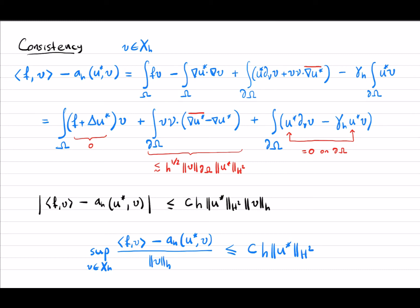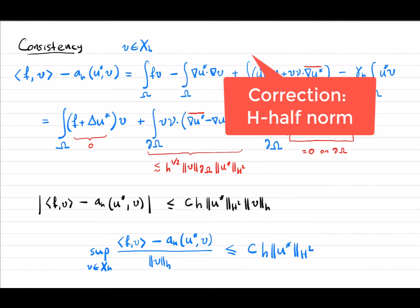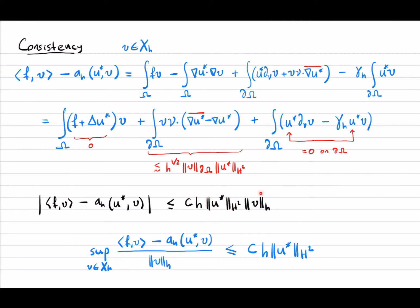The only thing we need to look at is the term coming from symmetry and integration by parts of the first term. One can show this is bounded by h^{1/2} times the H^2 norm of u star. First, bound the L2 norm of that difference on the boundary by the H^1 semi-norm on the interior; then use the fact that it's an L2 projection to gain half a power of h using the H^2 norm of u star. So the difference is bounded by the H^2 norm of u star times h times the h-norm of v. Since the h-norm of v contains a factor of h^{-1/2}, this becomes h times the H^2 norm of u star, and dividing by the h-norm of v gives h in front of the H^2 norm of u star.